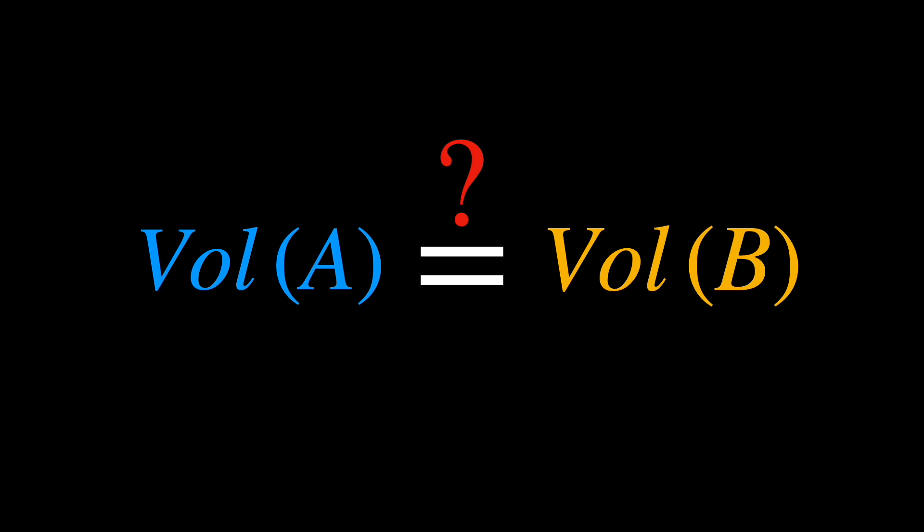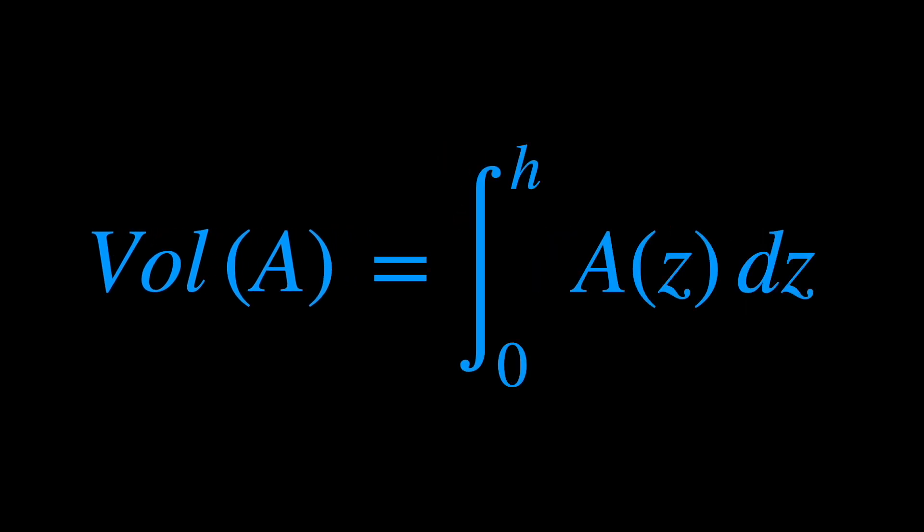We aim to prove that the volumes of solids A and B are equal. Let's calculate the volume of solid A. Va is the integral from zero to H of A of Z, dz.